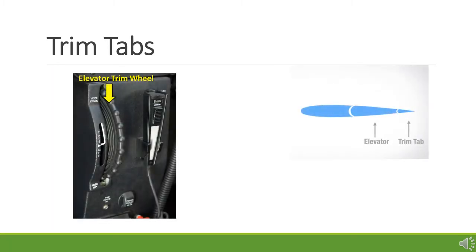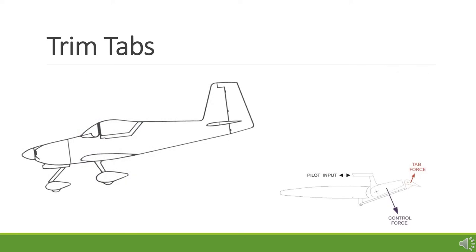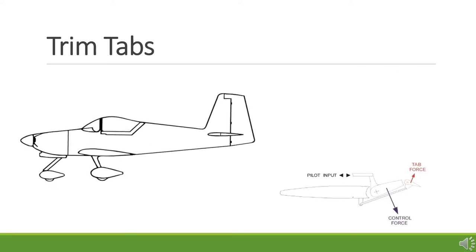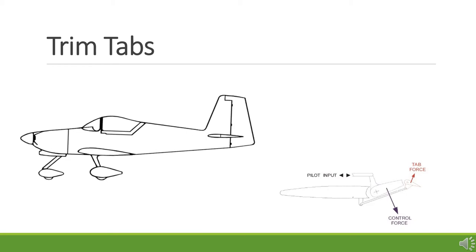Changing the setting of a trim tab adjusts the neutral or resting position of a control surface. As the neutral position of the control surface changes with changes for speed or altitude, an adjustable trim tab would allow the pilot to reduce the flight control force required to maintain that position. If set correctly, the force required to maintain heading or altitude would be reduced to zero. Under ideal conditions, the pilot would be able to release the controls and the aircraft would maintain constant course, altitude, or attitude.